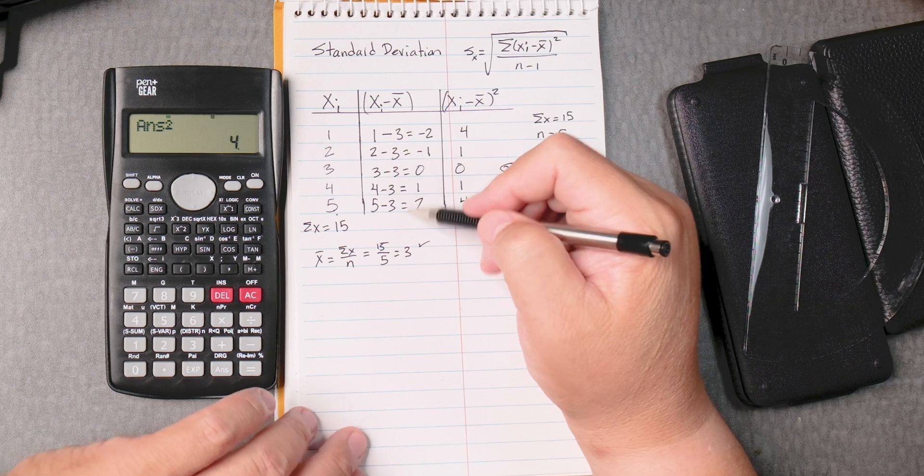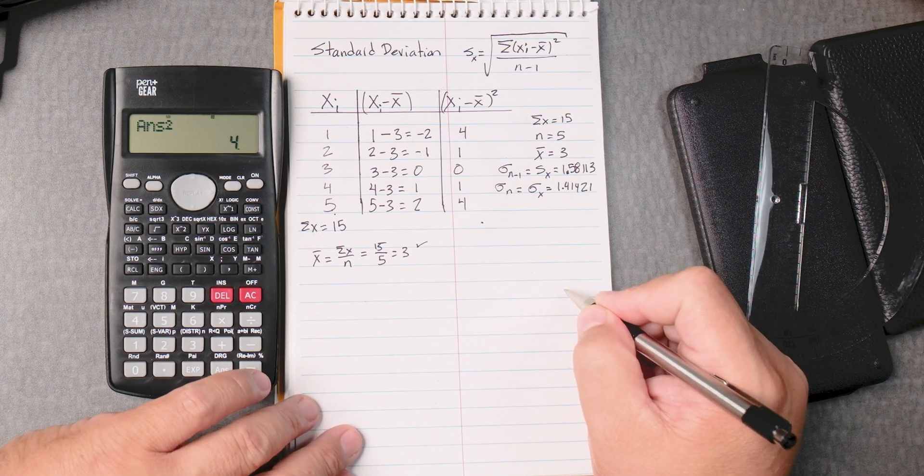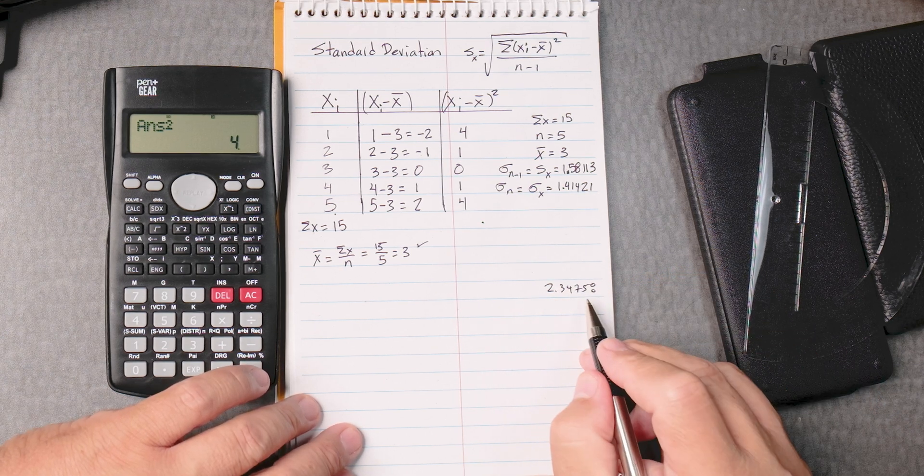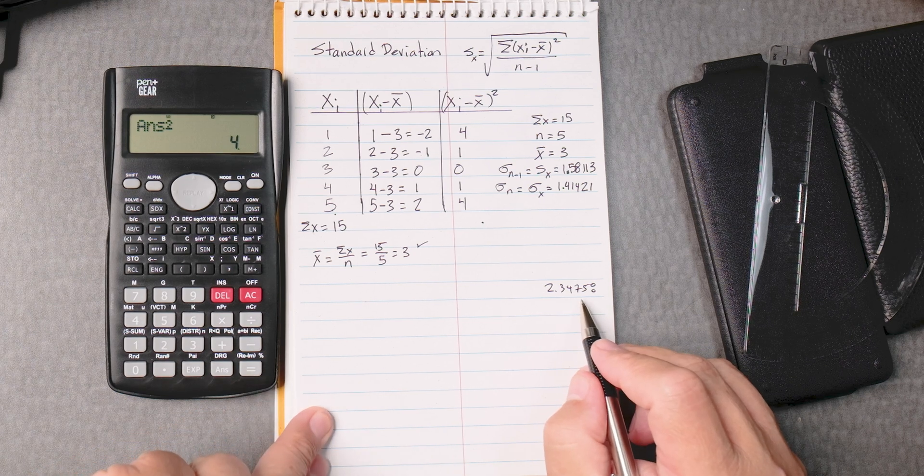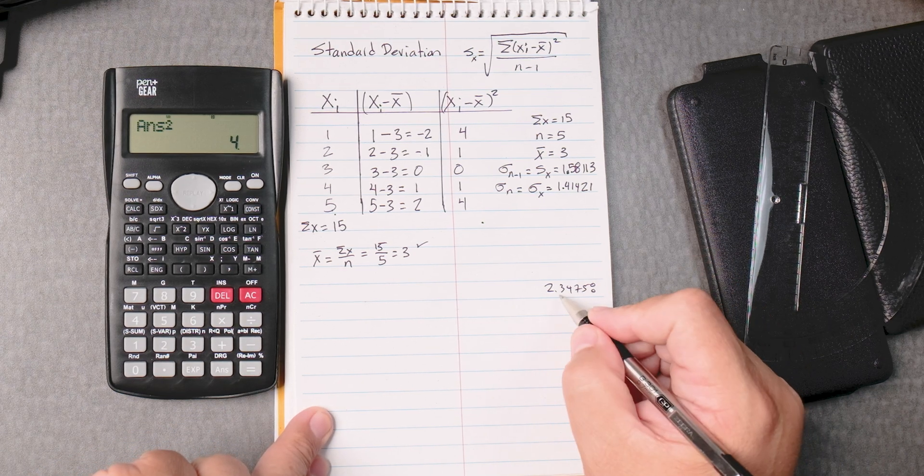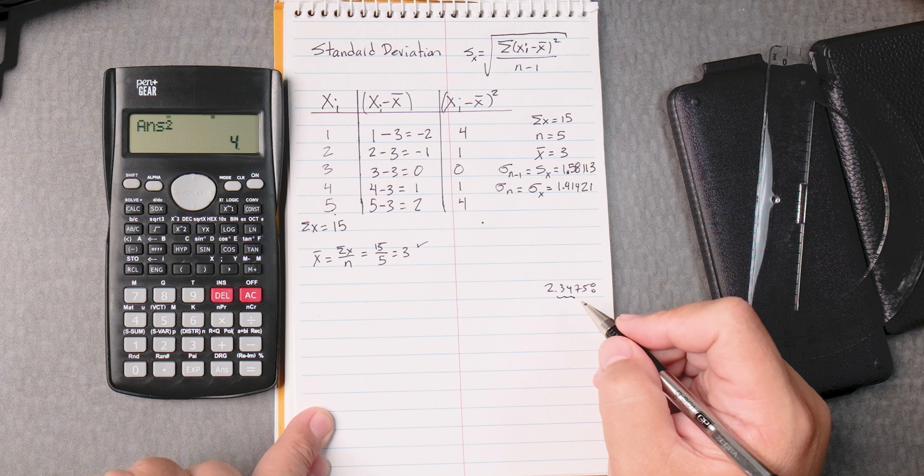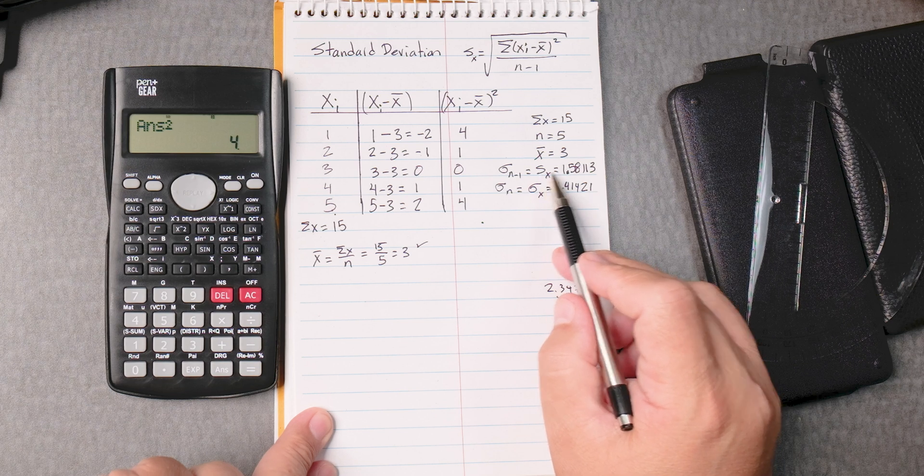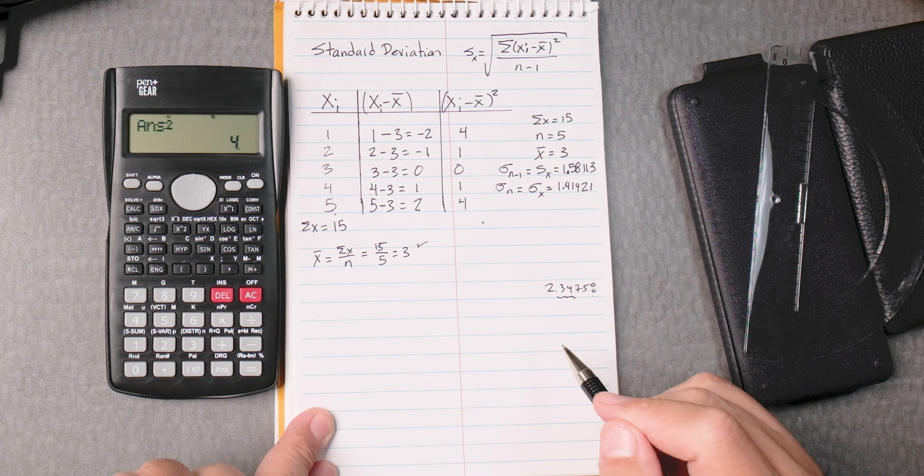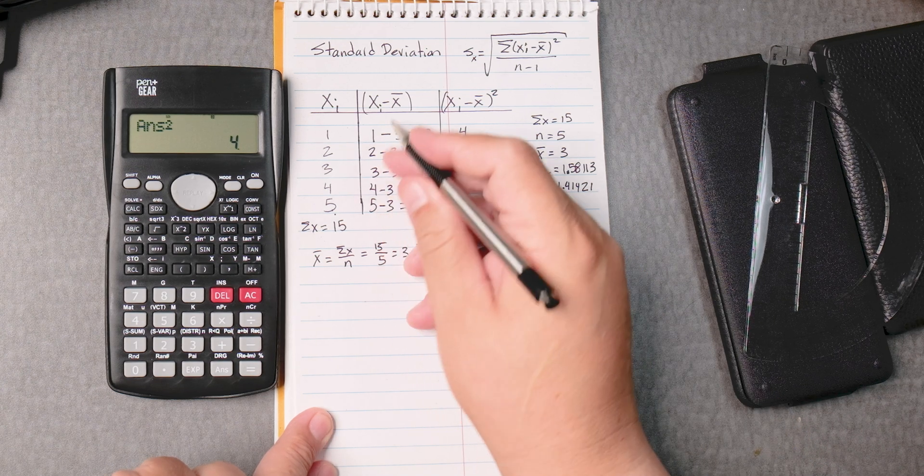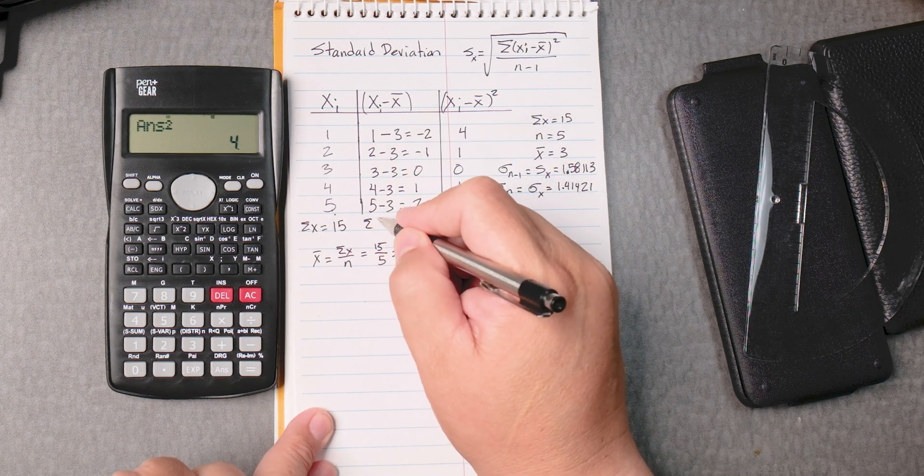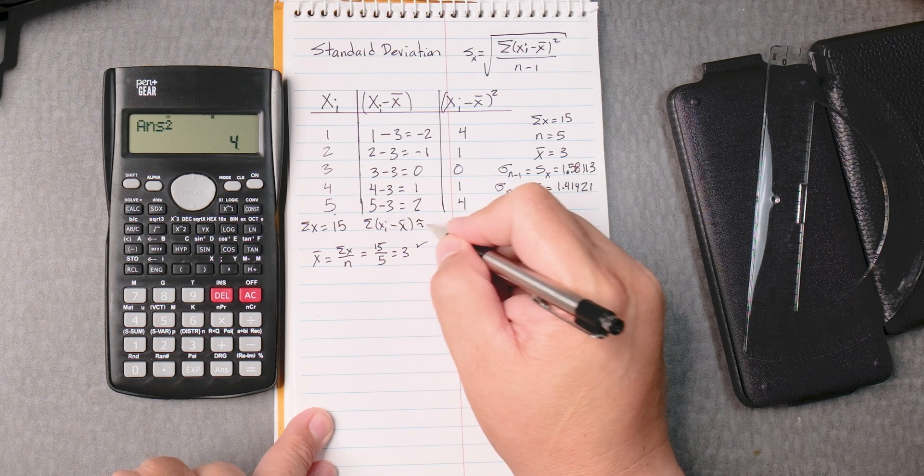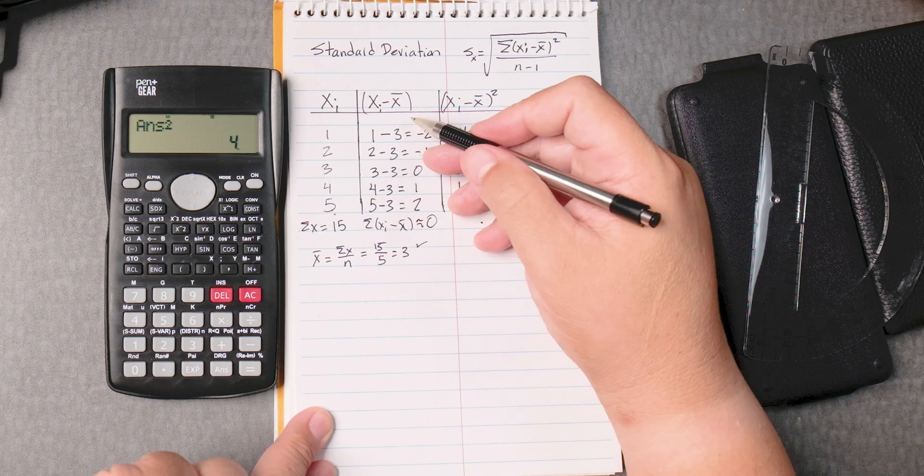One thing about this column here. If you get answers, let's say you subtract and you get an answer of 2.34758. The question is, how many numbers do you write out? Depends on your teacher. But 3 numbers after the decimal place is good. Because the more numbers you write out, the more accurate your answer will be compared to the calculator. So that's very important. If we add the sum of xi minus x bar, that's going to be approximately zero.